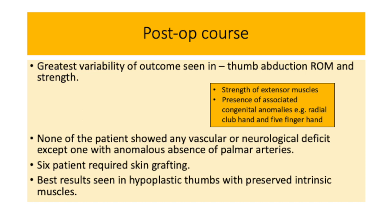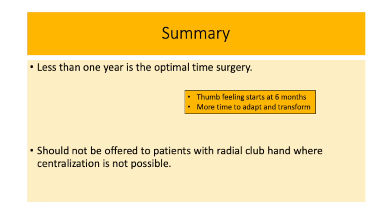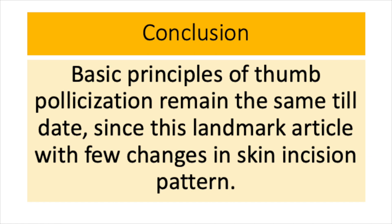Best results were seen in hypoplastic thumbs with preserved intrinsic muscles. The optimal age for surgery suggested in this article is one year, because thumb sensation starts at six months and earlier surgery gives the thumb more time to adapt. This surgery should not be offered to patients with radial club hand where centralization is not possible. In conclusion, the basic principles of thumb pollicization remain the same to this day since this landmark article, with very few changes in the skin incision pattern even in the most recent techniques. Thank you for watching.